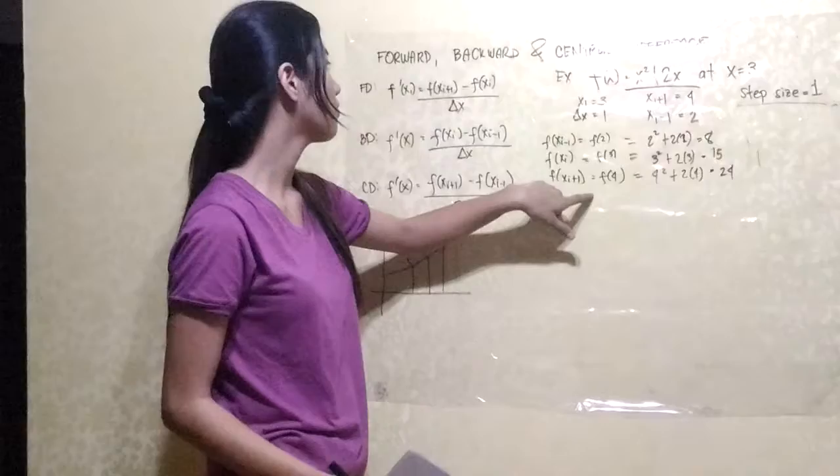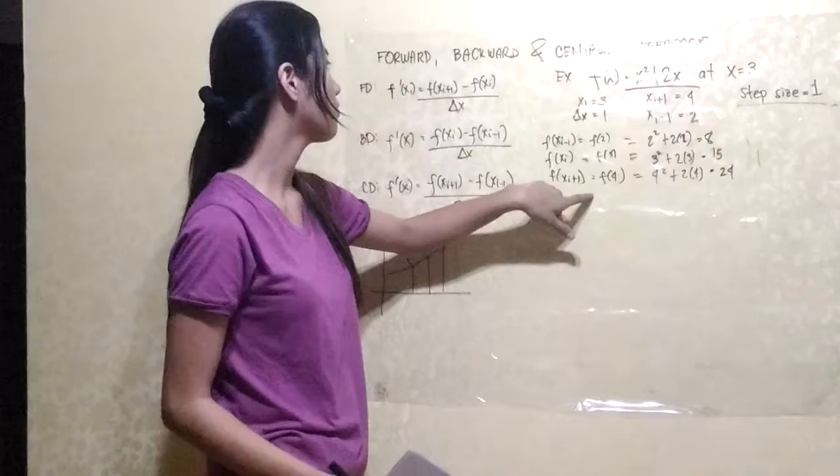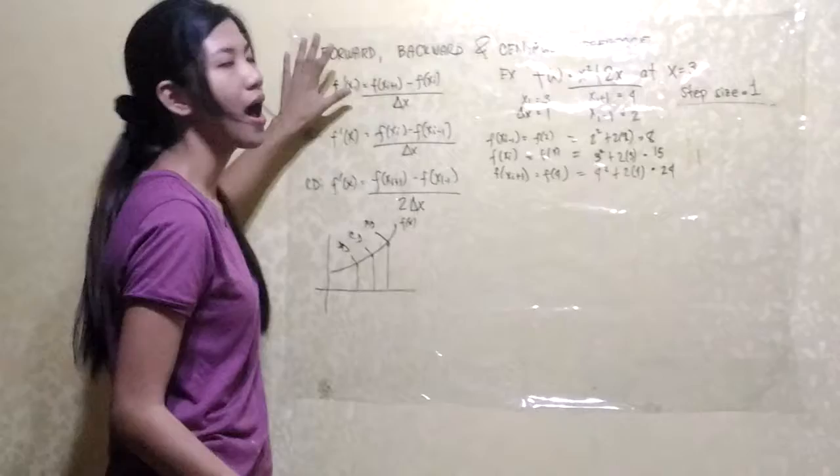Now that we have the function values evaluated at x equals 2, 3, and 4 — giving us f(2) = 8, f(3) = 15, and f(4) = 24 — we are going to substitute 8, 15, and 24 into our equations for the forward, backward, and central difference.